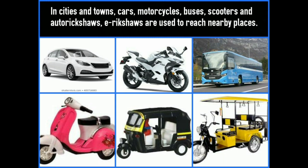In cities and towns, cars, motorcycles, buses, scooters, auto-rickshaws, and e-rickshaws are used to reach nearby places. The people who live in cities and towns use these different types of vehicles as means of transport. Trains are used to travel long distances.